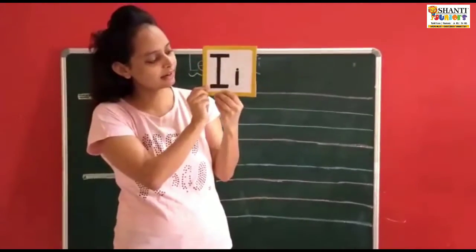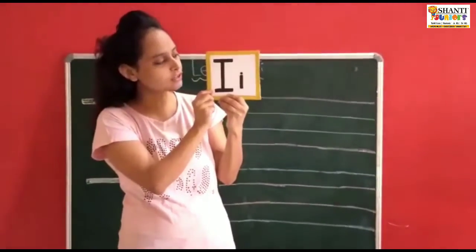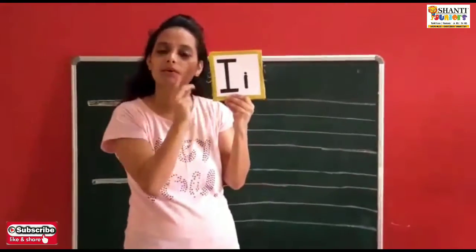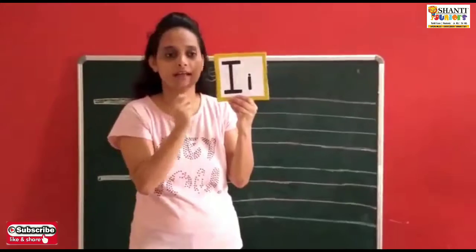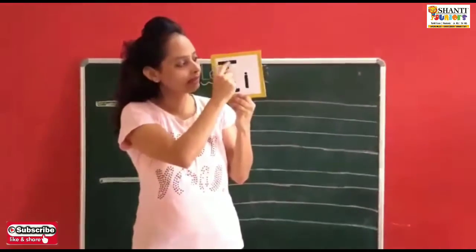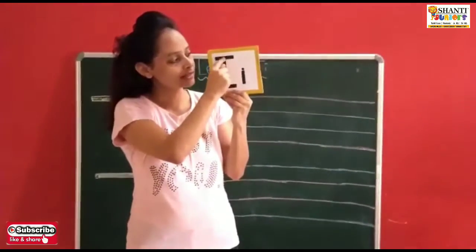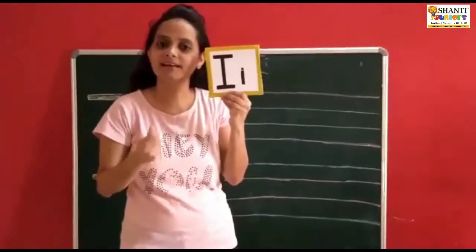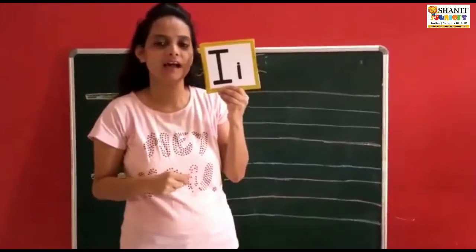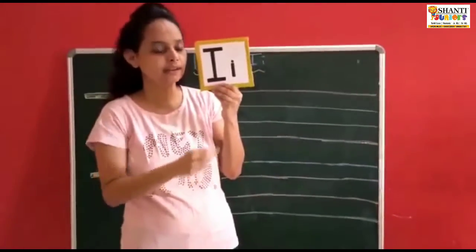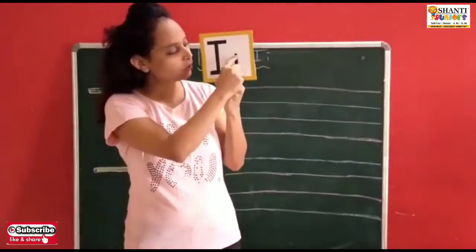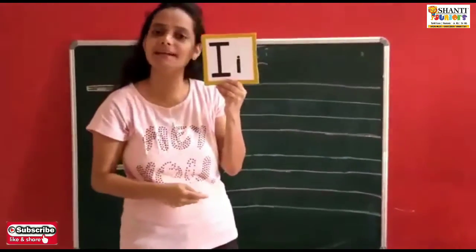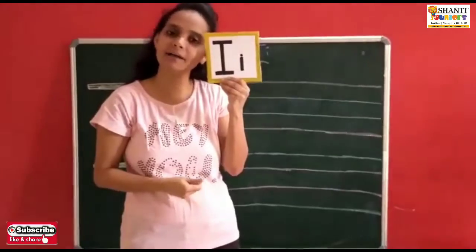So how will we write letter I, children? Very simple — only two patterns are there: sleeping line, standing line, sleeping line — it becomes letter I. And how do we write small letter I? Only a short standing line — it becomes letter I.